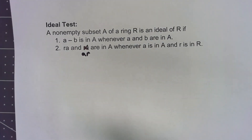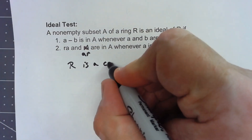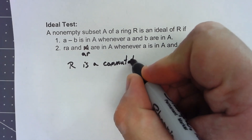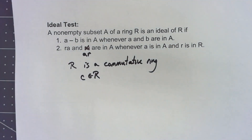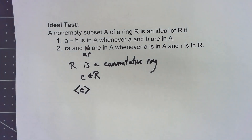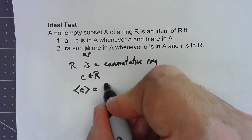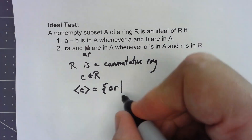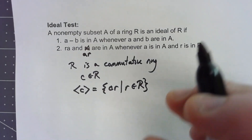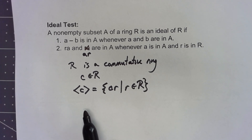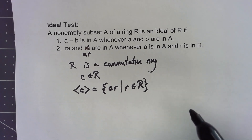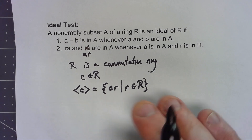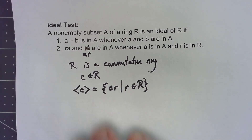Let's look at a generic example. Say R is a commutative ring and C is some element of R. I'm going to define ⟨C⟩ to be the set of all CR such that R is in my ring. This is the same notation we used for a cyclic subgroup, and it's related but not exactly the same thing. Since we're talking about rings here, this is the ideal generated by C.